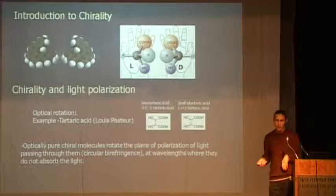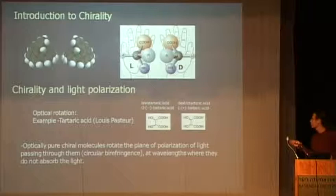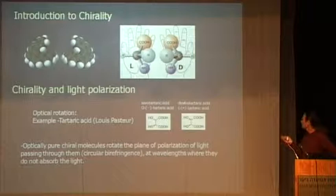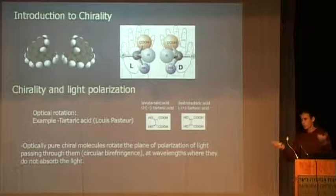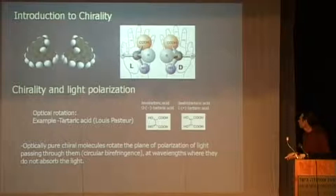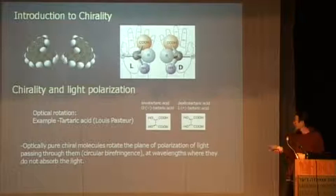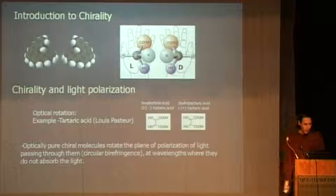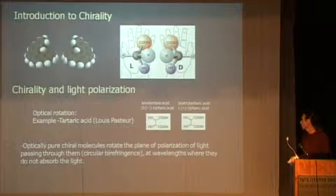Chirality appears a lot in organic molecules. Every molecule that has a carbon atom with four different groups attached to it has a chiral center. In biological molecules like proteins, you can find that basically almost everywhere. There are also more exotic molecules that don't have carbon atoms with four bonds but still have helical structures — and helical structures are also chiral. It all started with Louis Pasteur at the beginning of the 19th century.